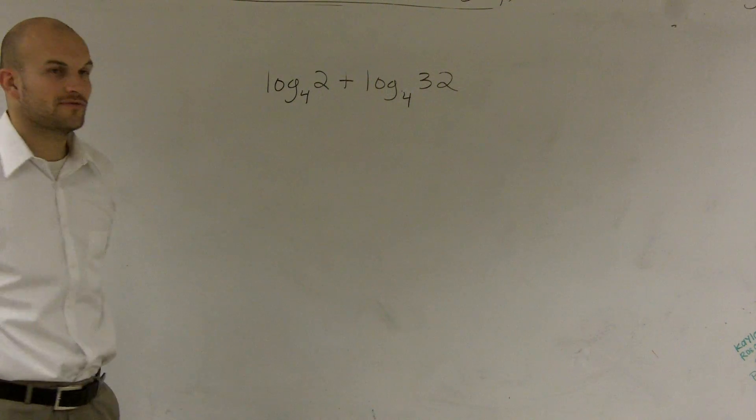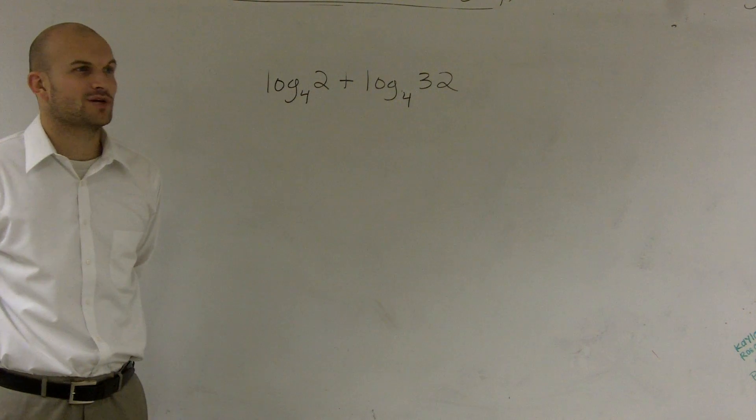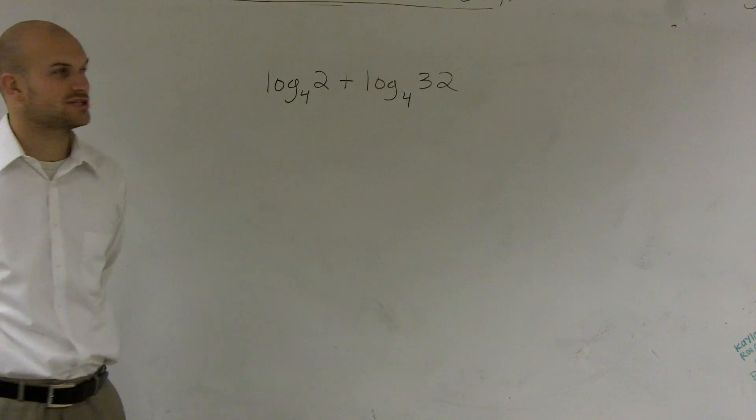But then log base 4 of 32, so 4 squared is 16, 4 cubed though is 64. So there's not going to be an even number that's going to give me 32, right?